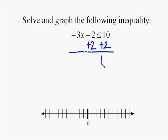We start this by adding 2 to both sides because we want to get rid of the negative 2 on the left side. So negative 3x minus 2 plus 2 is negative 3x, and that's less than or equal to 10 plus 2, which is 12.